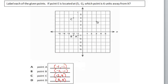Now, let's go ahead and locate point E. Point E is located at 5, negative 1. So that means on my x-axis I have to go positive 5, and on my y-axis I have to go down 1 to negative 1. So point E would be right here.